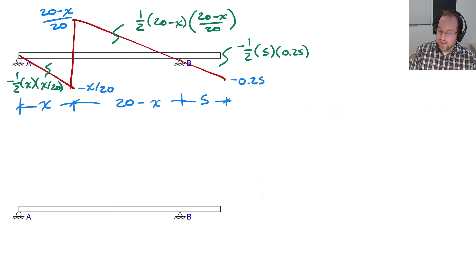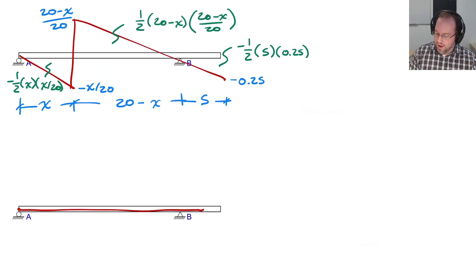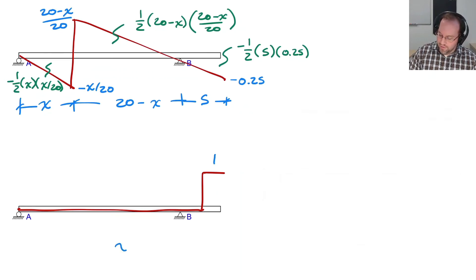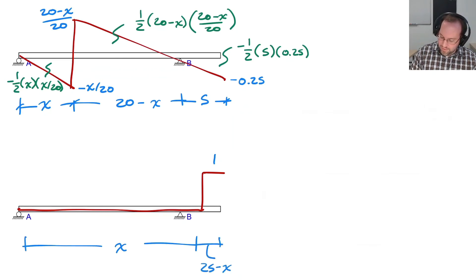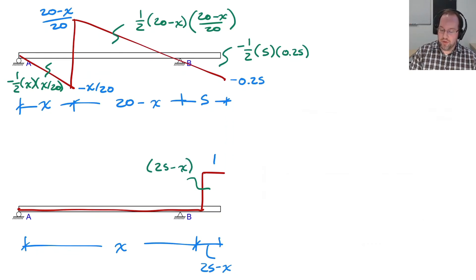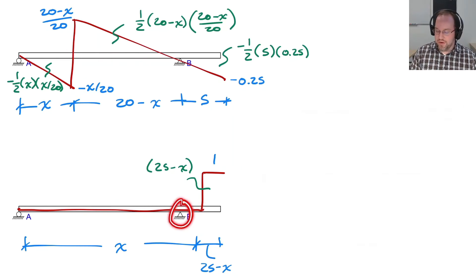Moving to the cantilever region, the influence line looks completely different — it's a straight line that suddenly jumps up by 1 but remains at a slope of 0. Here the height is 1. With the location of interest being x, this distance is 25 − x, and the area blocked off is 25 − x. This generalizes the influence line so that even when x crosses the span boundary and the influence line shape changes, we can still consider that case.